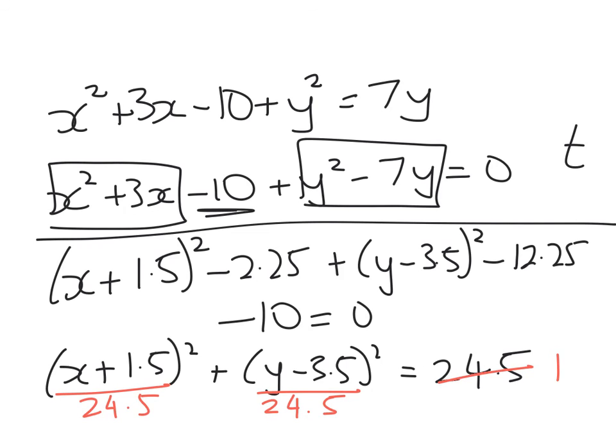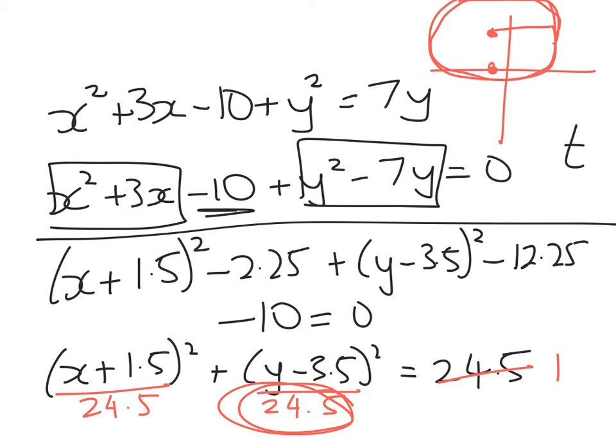And what do I see there? I've got the equation of a circle. And I've got a circle, but it's not centered on 0. It's a circle centered on negative 1.5 and positive 3.5, and the radius is going to be just under the square root of that, which is under the square root of 5.